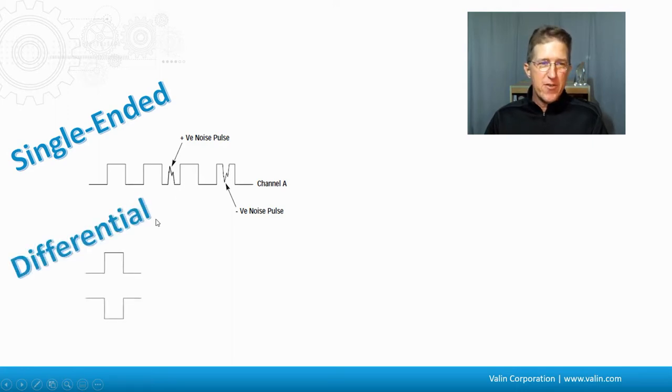With a differential signal, we get two wires, two signals going, and one is going to be the opposite of the other. So here we have a positive square wave, here we have a negative square wave.